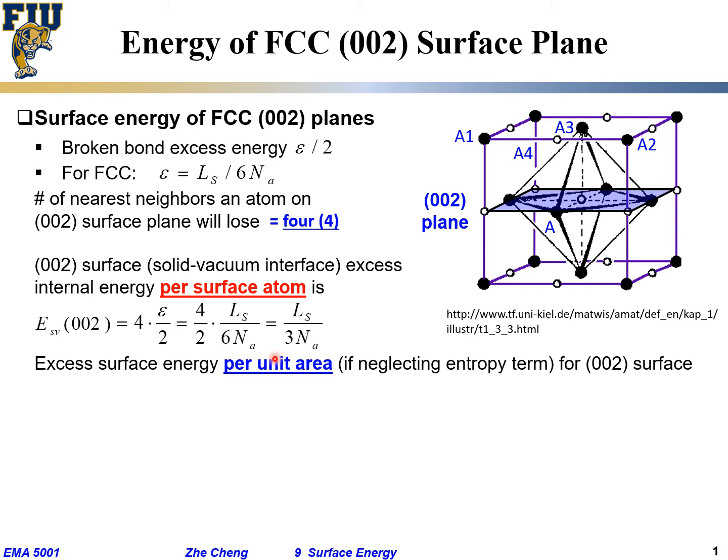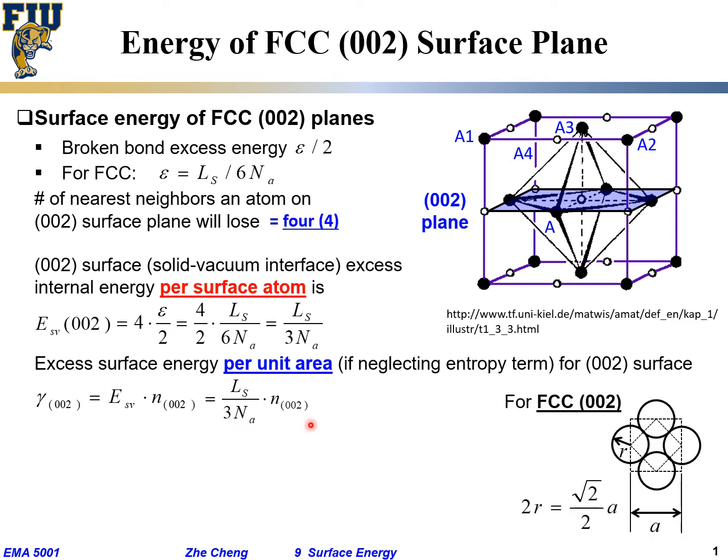That's the excess energy per surface atom. Then we said we are more concerned with the energy per unit area. That's the typical unit for surface energy, not per atom but per unit area. For this surface plane, similarly we are going to write gamma for surface energy per unit area would be E, excess energy per atom, times N, the number density. What density? Area density, number per unit area, for what plane? (002) plane. So now becomes, can we estimate or calculate this N(002)? The first term is Ls over Na over 3 we keep, and the second term is N.